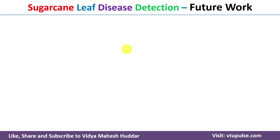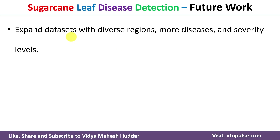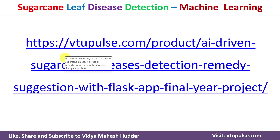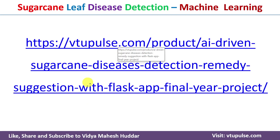In future work, the dataset can be expanded with diverse regions, more diseases, and severity levels. In this video, I have demonstrated sugarcane leaf disease detection. You can download the project through the link in the description below. If you like the video, please like and share with your friends. Press the subscribe button for more videos and the bell icon for regular updates. Thank you for watching.